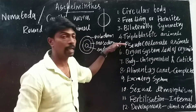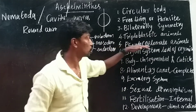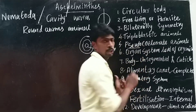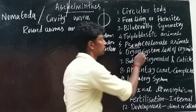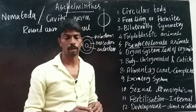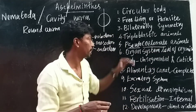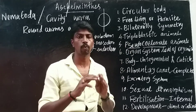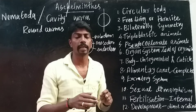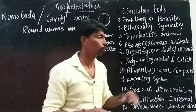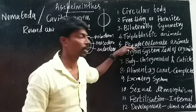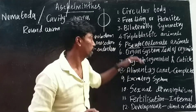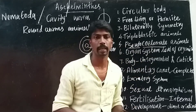These animals are pseudocoelomate animals. 'Pseudo' means false. The body has a cavity, but it is a false cavity — the cavity has a particular structure. So these animals are called pseudocoelomate animals.